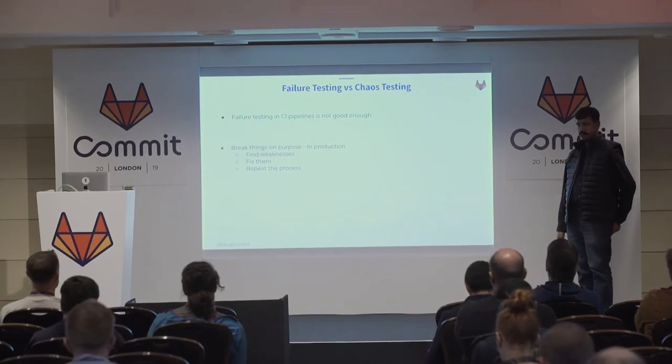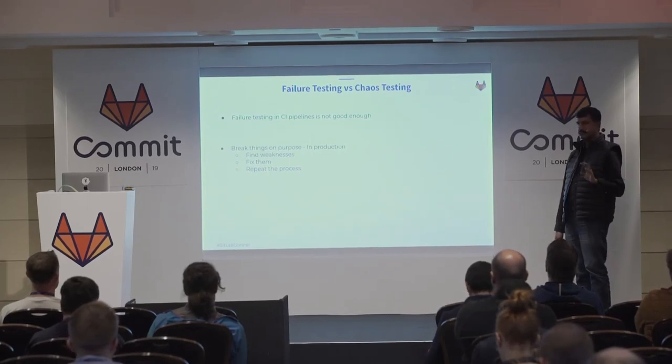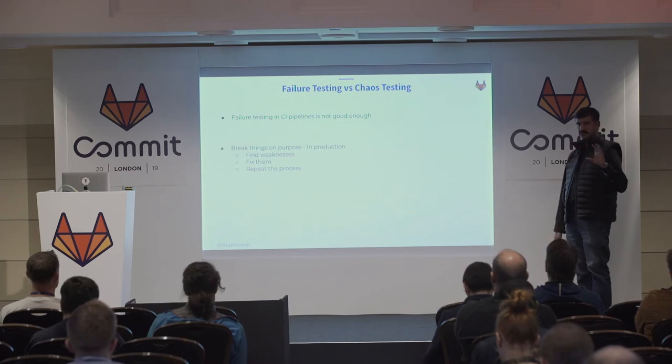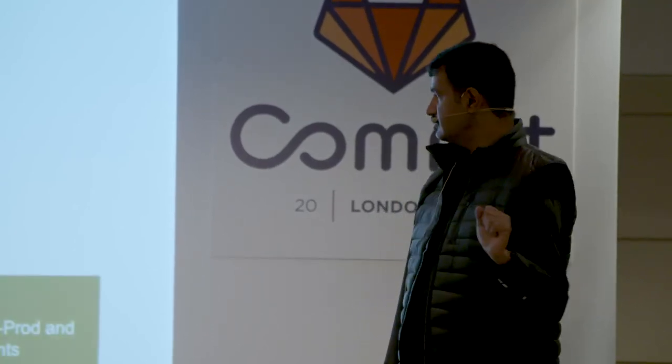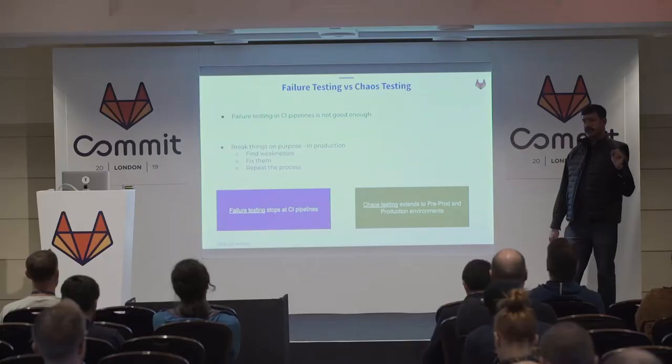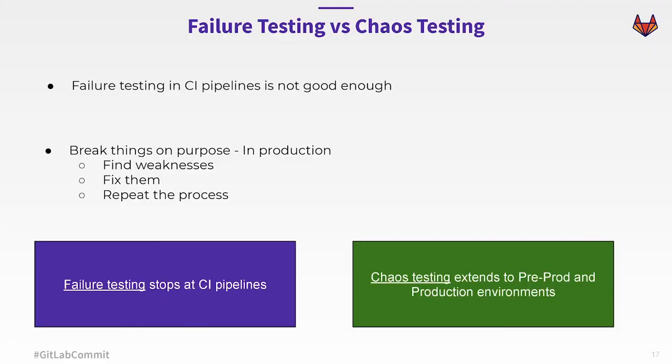In production, CI is one step. In production, you go break things on purpose, you observe and fix them, and then you keep continuing. Failure testing versus chaos testing: failure testing really ends at CI pipelines. Chaos testing extends the failure testing into production — you never stop injecting faults, you never stop testing in production.